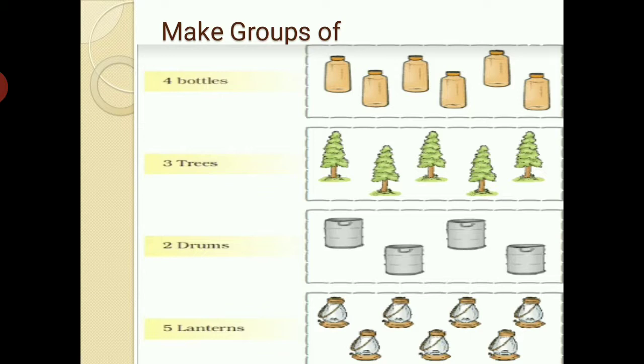4 bottles. Now here 1, 2, 3, 4, 5, 6. 6 bottles are there. So, you have to circle, make the group of only 4 bottles. Out of 6, leave 2 bottles and make a circle. Mark with a pencil 4 bottles. Draw a circle or anything else, square or whatever you like.